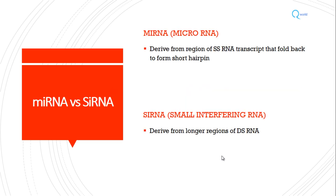There is another term — siRNA — which some people confuse with miRNA. miRNA stands for micro RNA; siRNA stands for small interfering RNA. The key difference is that miRNA derives from a single-stranded RNA transcript which folds back to form a hairpin-like structure, while siRNA derives from longer regions of double-stranded RNA.